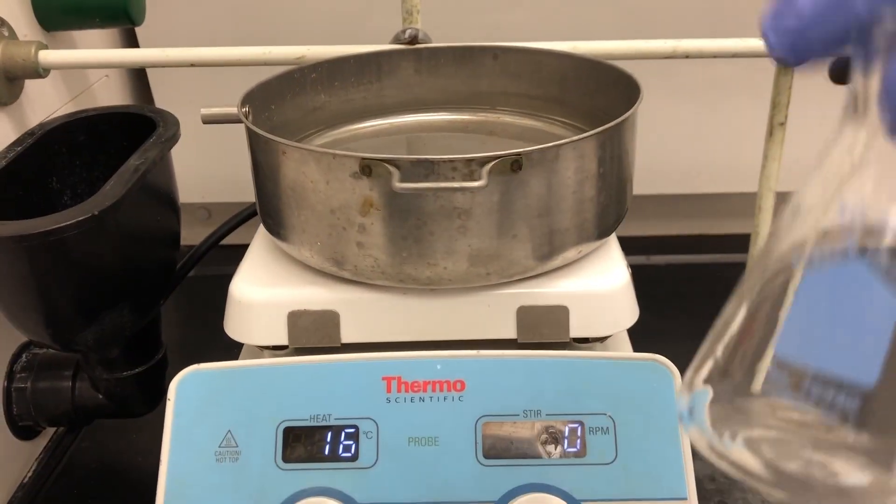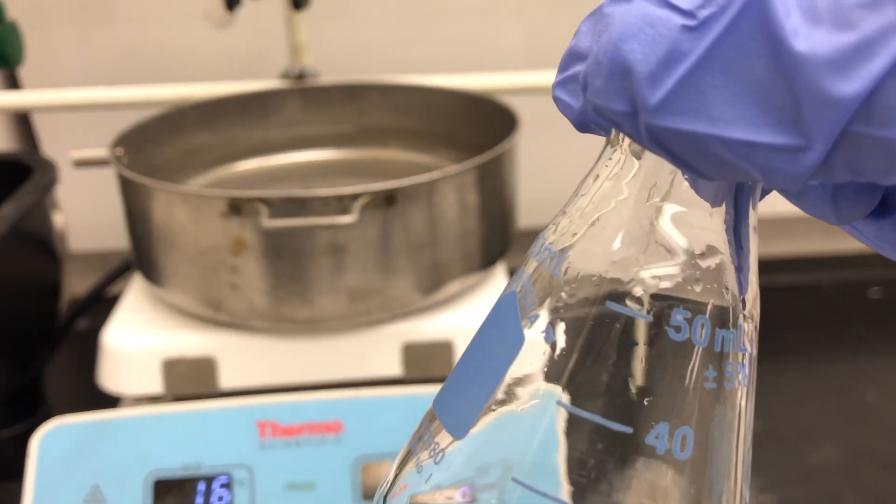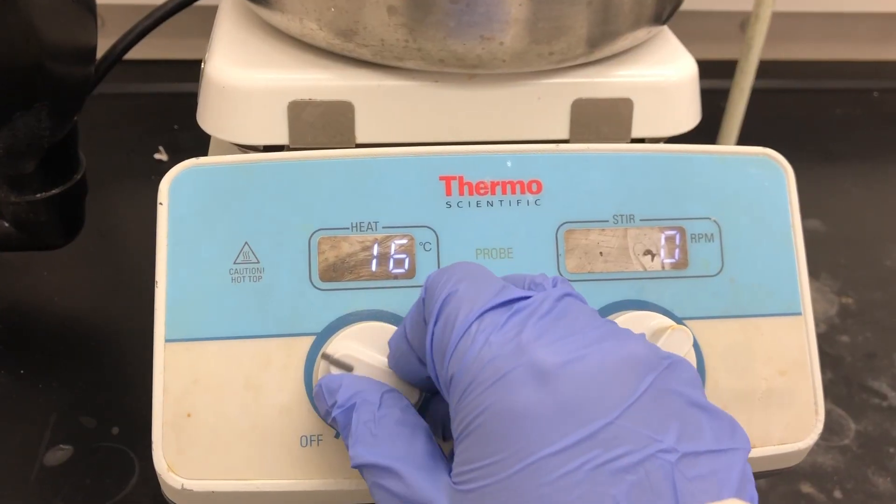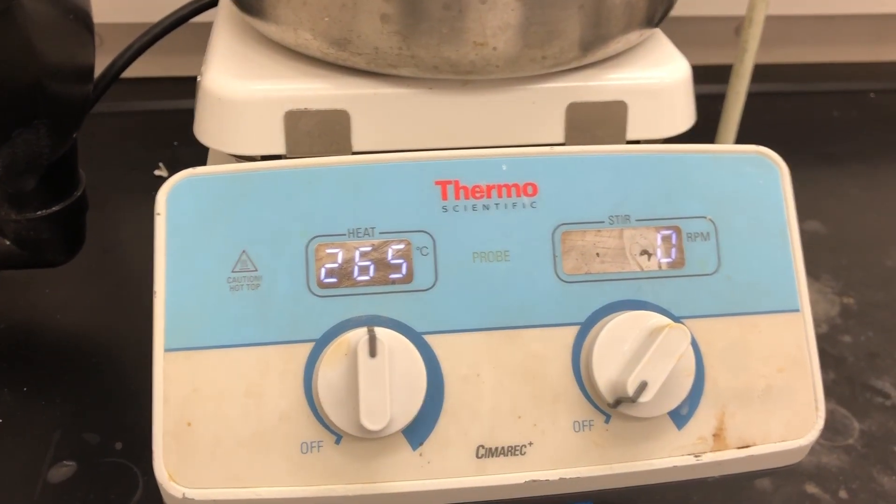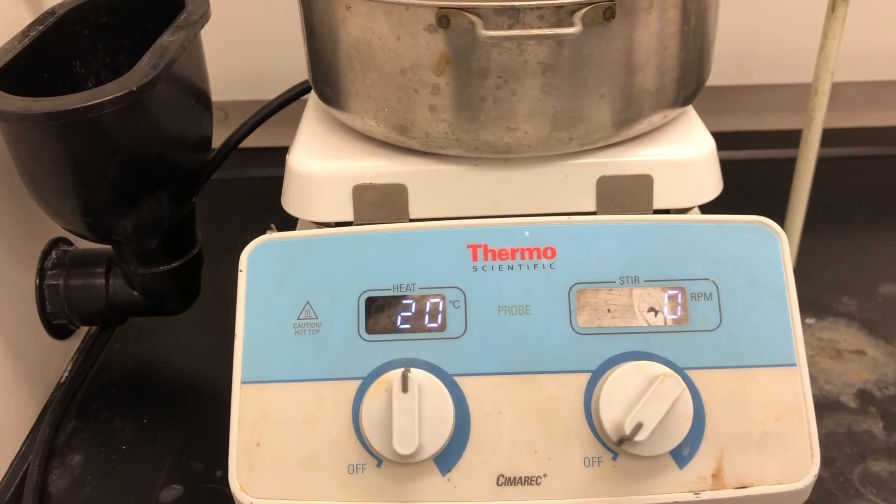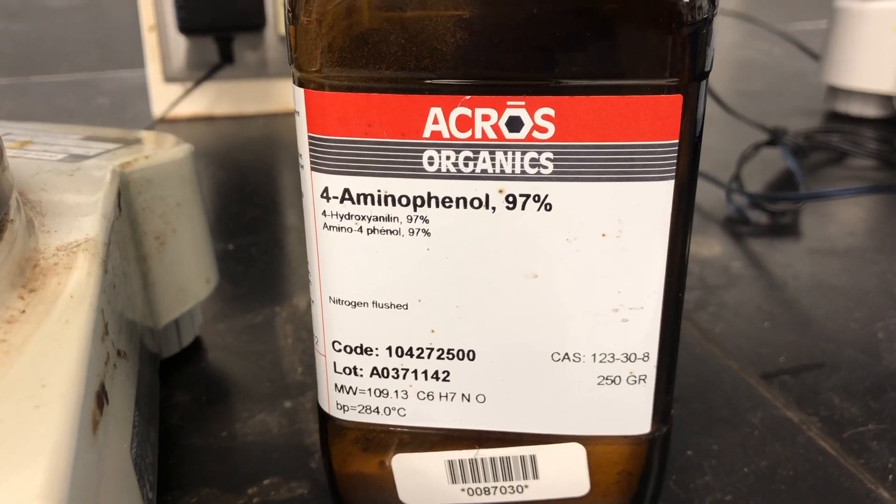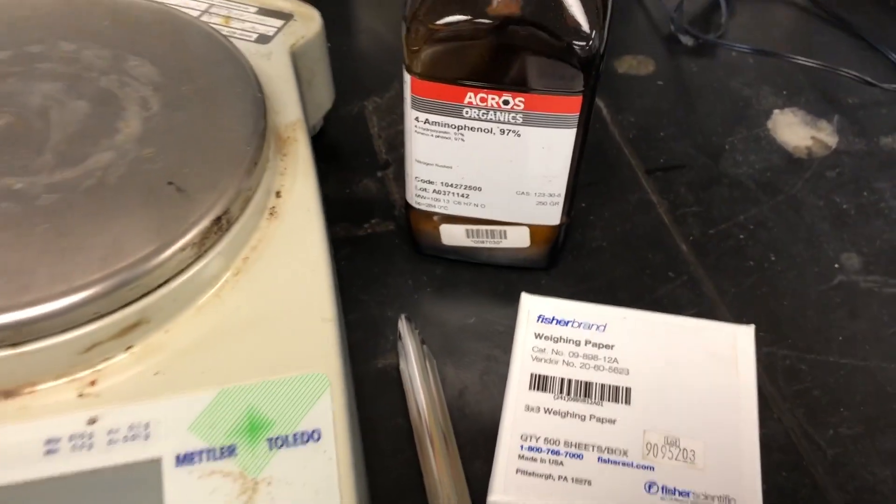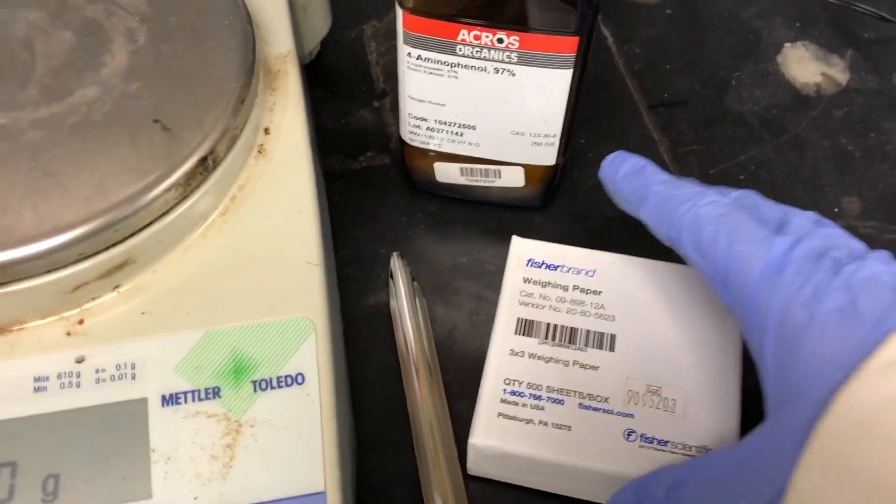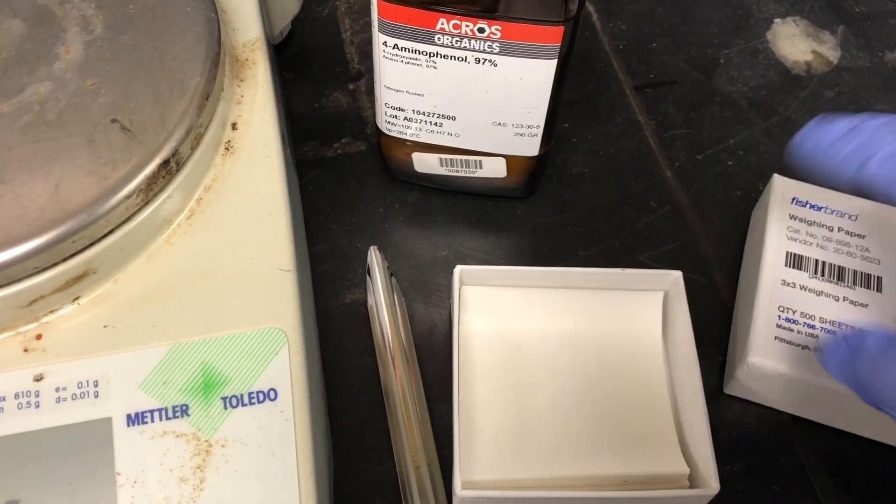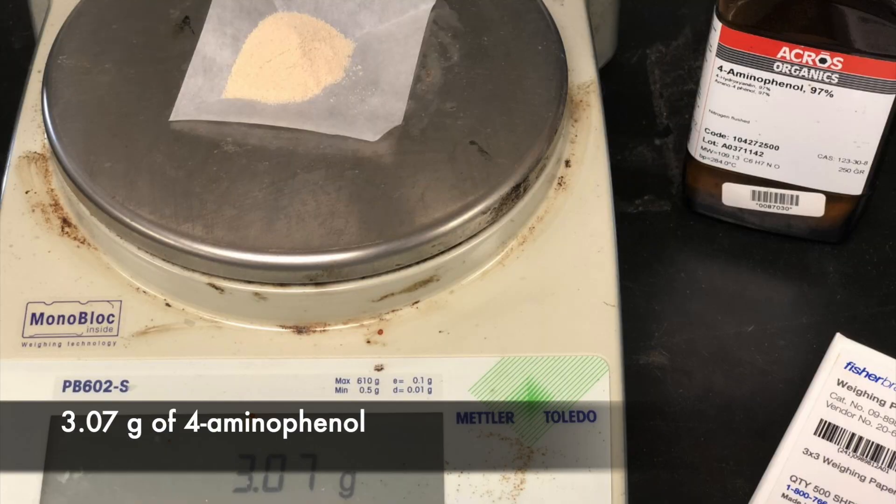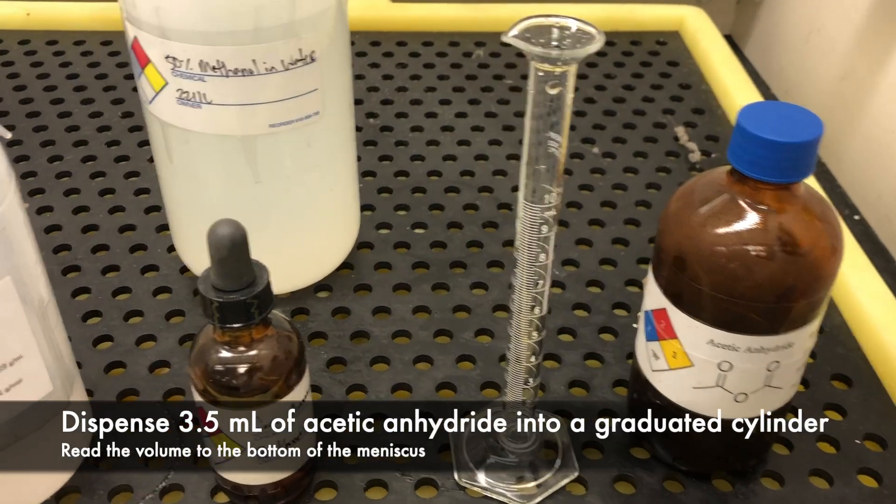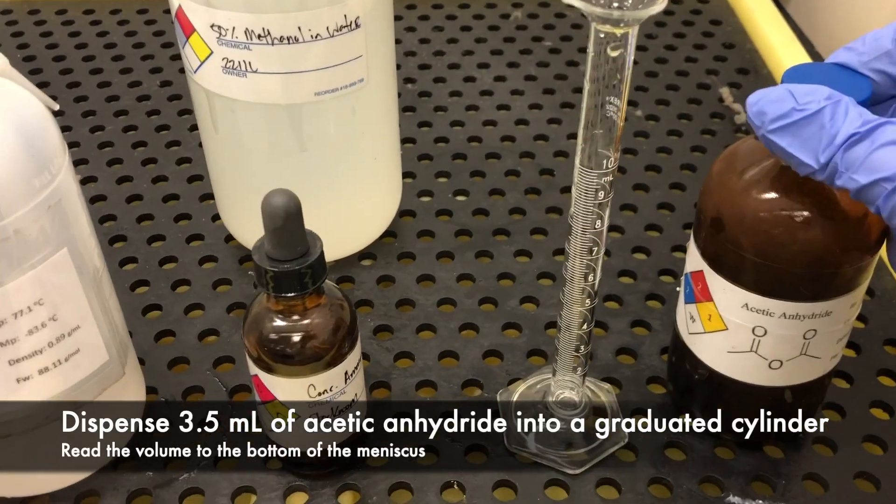I'm going to take a minute to go weigh p-aminophenol, and while we do that we'll go ahead and turn on the hot plate. P-aminophenol is one of our two starting materials. We're going to weigh around three grams using weighing paper.